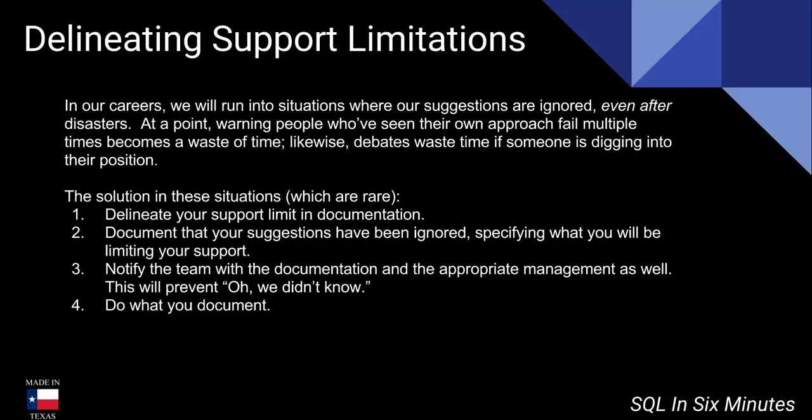You can say: I'll support re-indexing, I'll support maintenance, but if there's another failover, I'm not going to be supporting that — whatever is causing issues that you're being ignored on. Then notify the team you're working with, along with the documentation and their appropriate management — that may be the CTO or CIO, sometimes it's not. This will prevent the 'we didn't know' excuse. Sometimes there are legitimate situations where a manager wasn't in a meeting and they didn't know, but if they weren't, notify them.